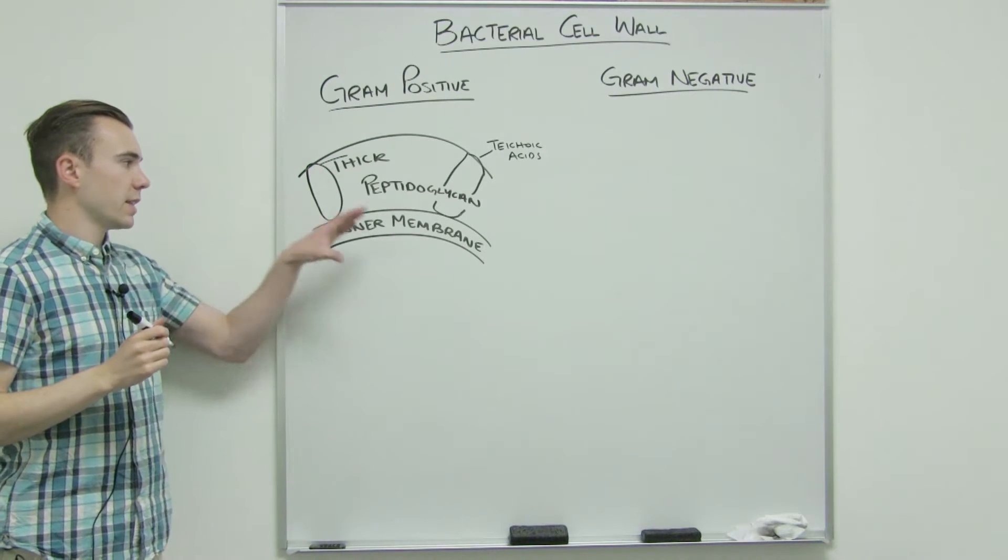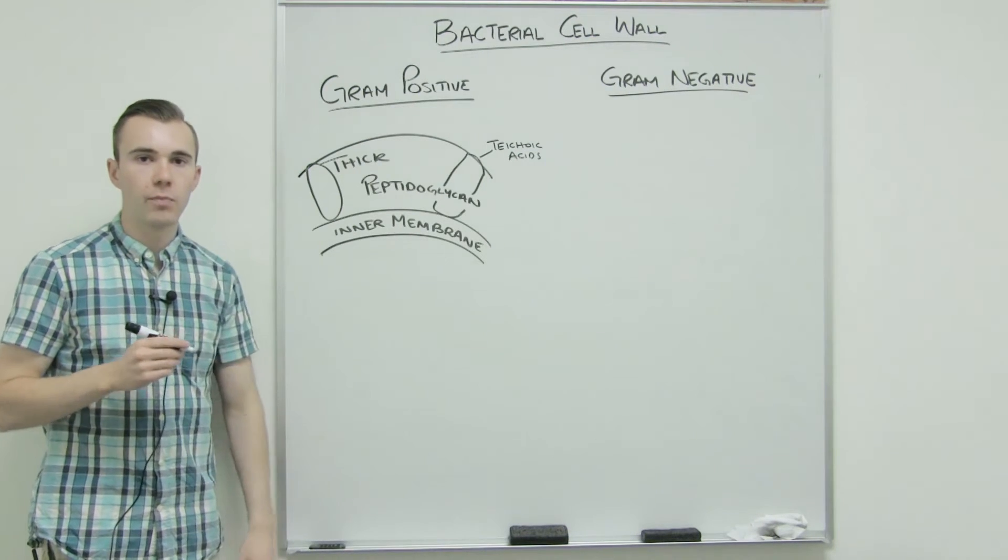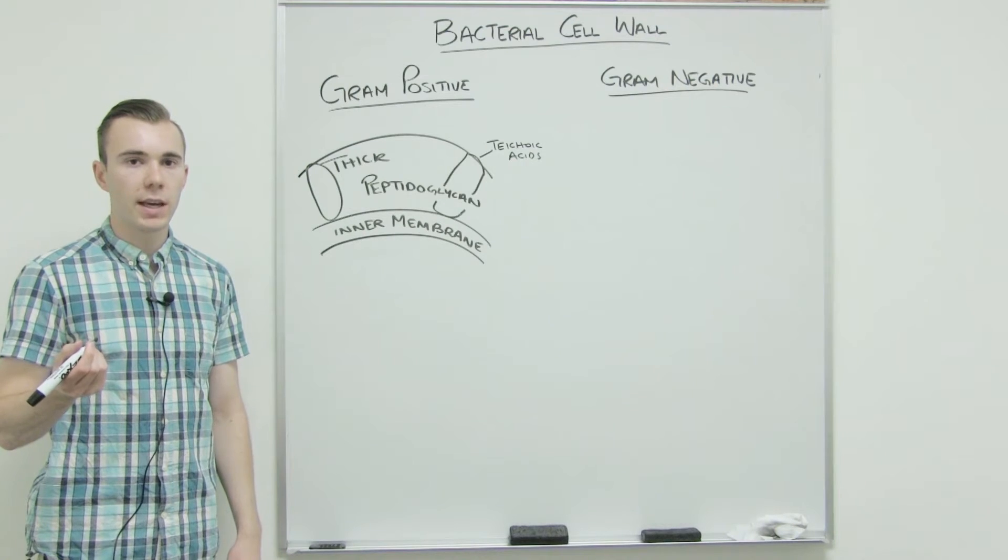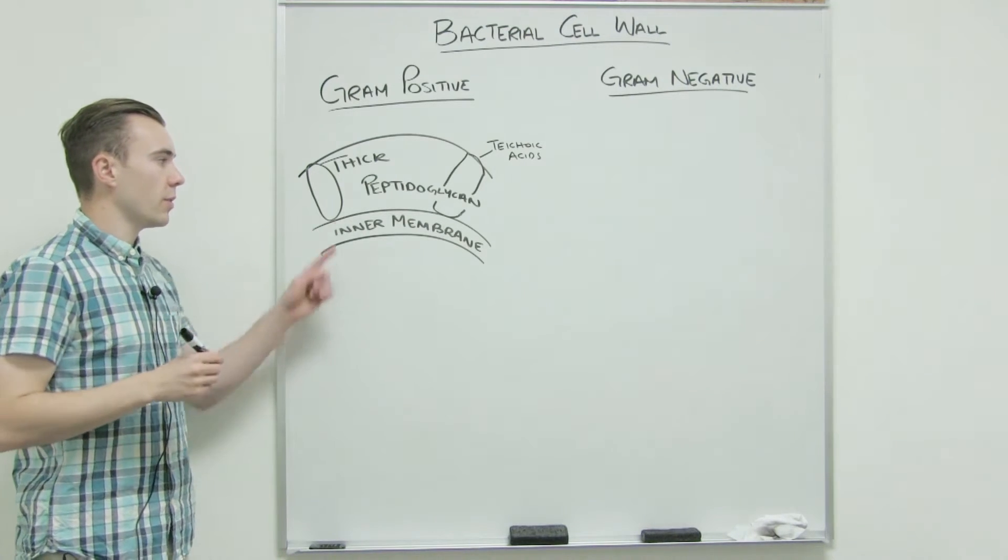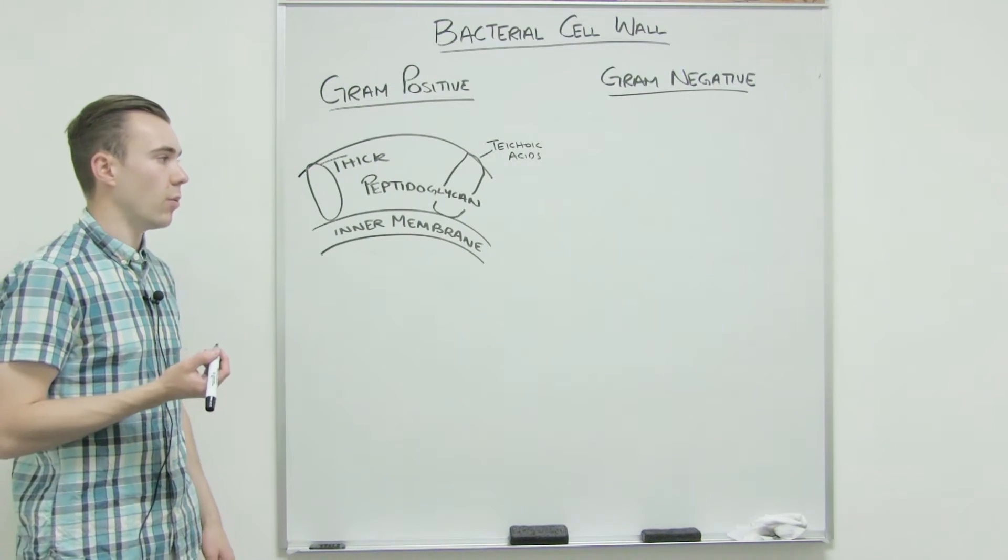I just kind of drew them in as like these cylindrical shapes within the peptidoglycan. And those are called teichoic acids. They're just there to help hold things together. We'll talk about the structure of peptidoglycan itself in just a minute after we cover the gram-negative cell wall.